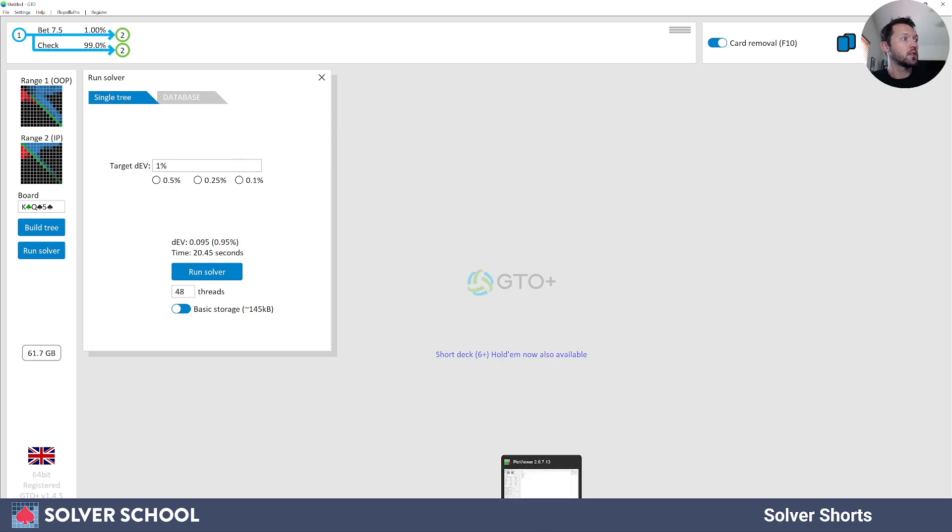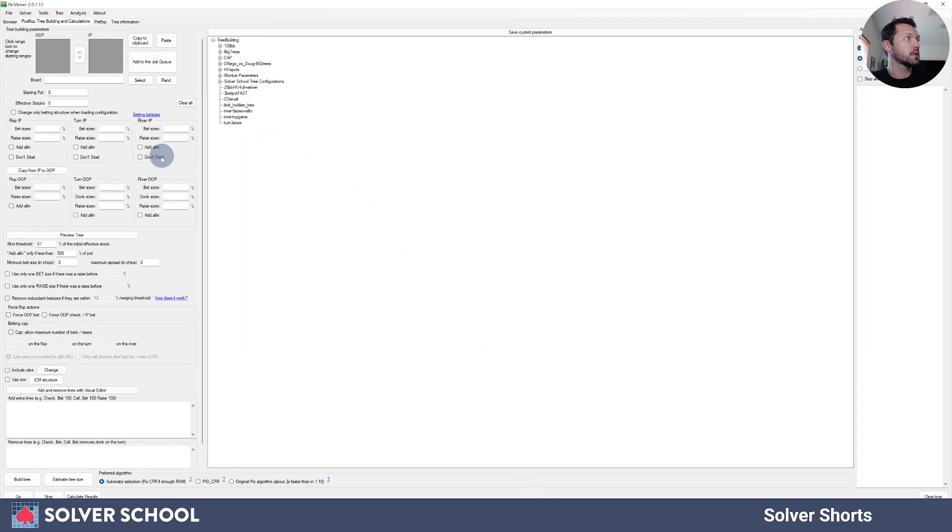Hopping over into PIO Solver, it's similar. I go to this postflop tree building and calculations tab. This is where I would enter my ranges, my board, my pot size, my stack size, and the various bet configurations.